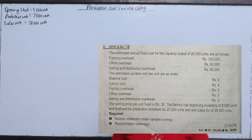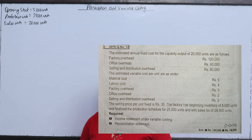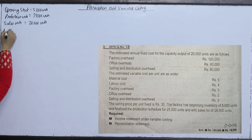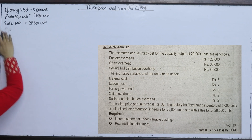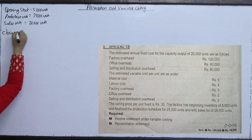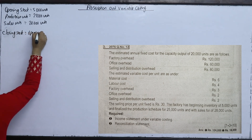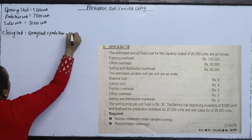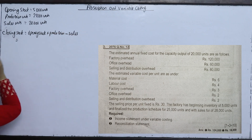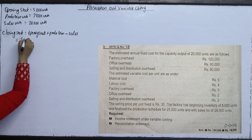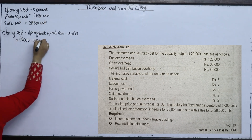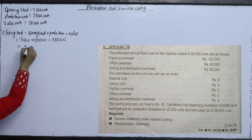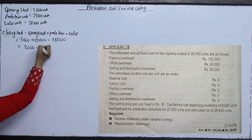Now we need to find the closing stock. Opening stock is 5,000 units plus production of 25,000 units, minus sales of 28,000 units — this gives us a closing stock of 2,000 units.